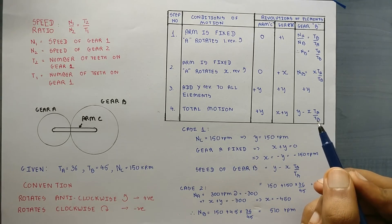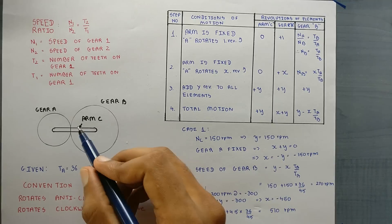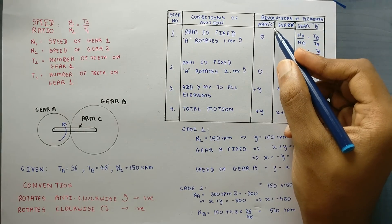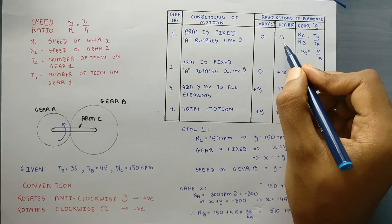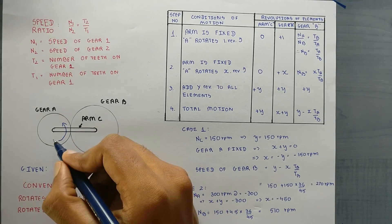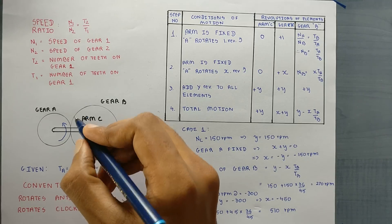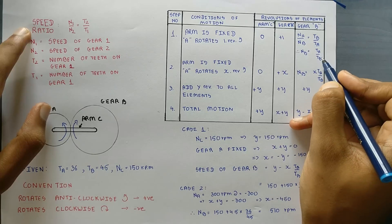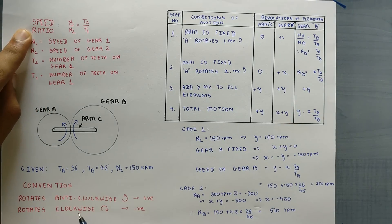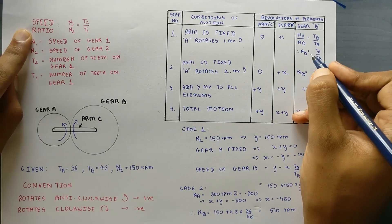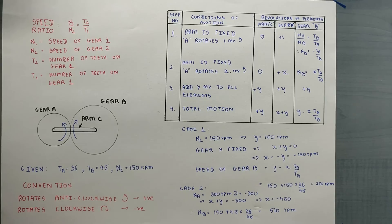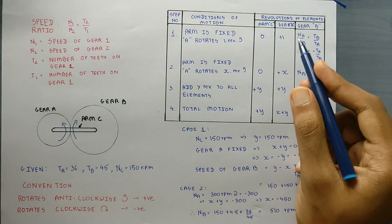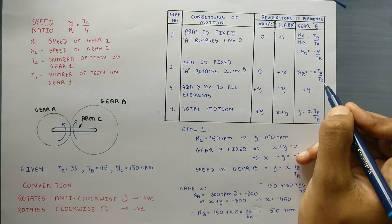Now we will start drawing a table. The first step is to forget whatever is given in the question. We start with the assumption that the arm is fixed and A rotates at 1 RPM in the anti-clockwise direction. Since gear A and gear B are meshed, gear B will rotate in the clockwise direction. According to the speed ratio formula, NA by NB equals TB by TA, therefore NB equals minus TA by TB. Now assuming the arm is fixed and A rotates at X revolutions, NC = 0, NA = +X, and NB = minus X times TA by TB.